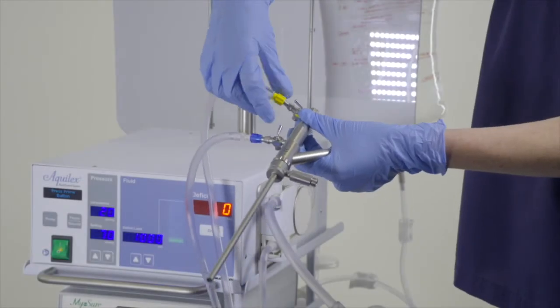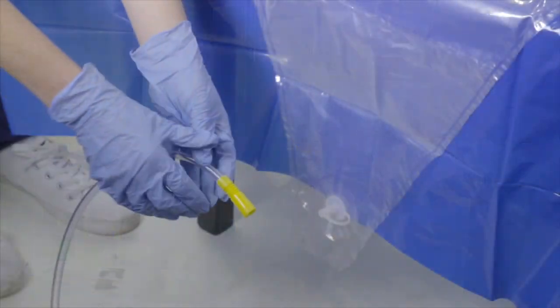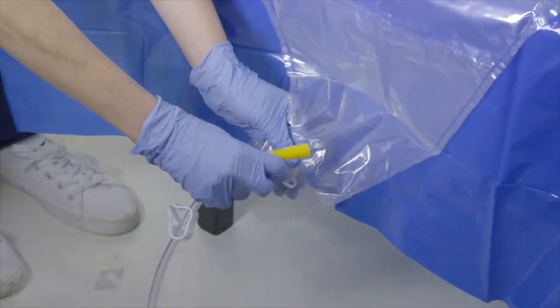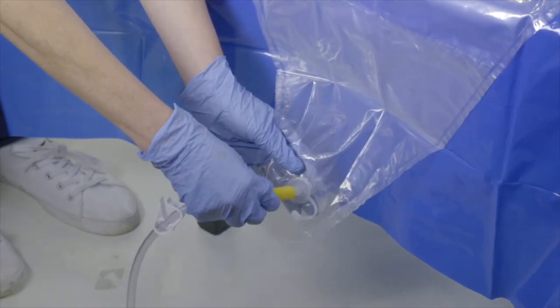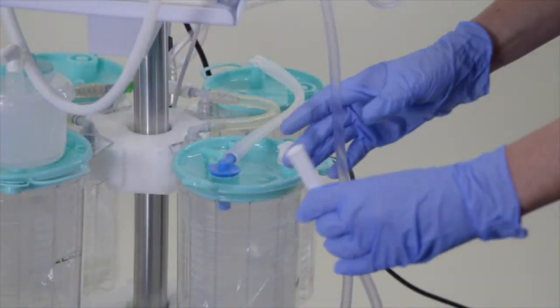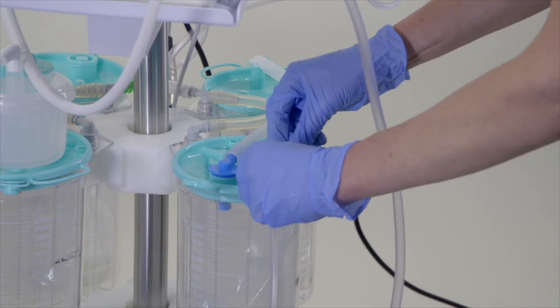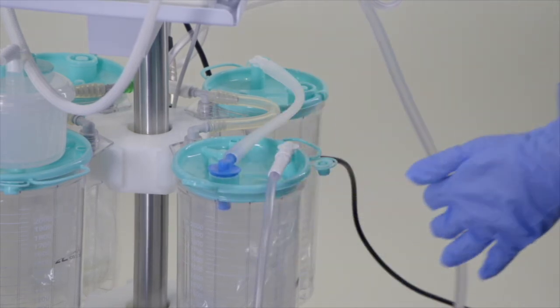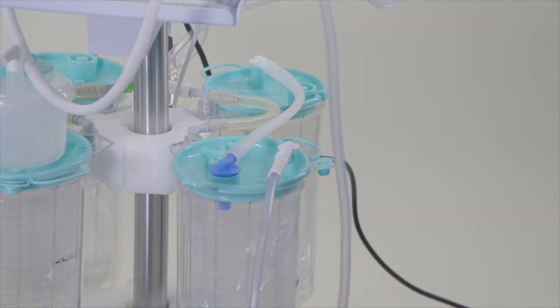Attach the yellow luer lock to the outflow channel of the hysteroscope, and attach the yellow tip to the underbuttock drape. Ensure you do not clamp the tubing as shown. The white tip end will be handed to the circulator and inserted into the right front canister as shown. Outflow setup is now complete.